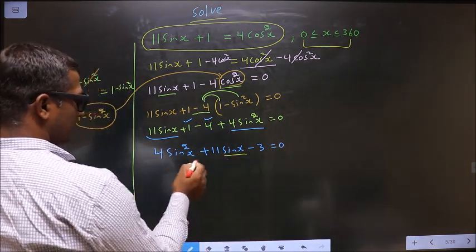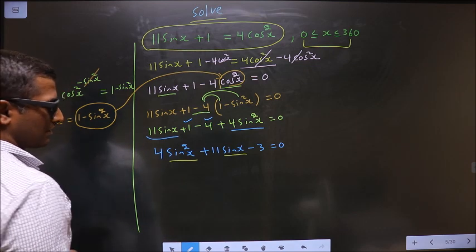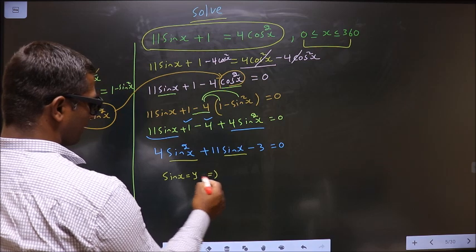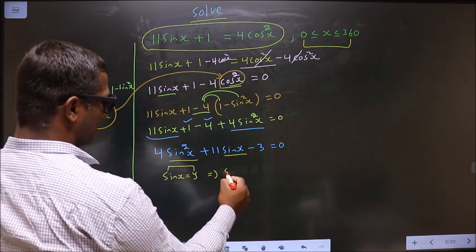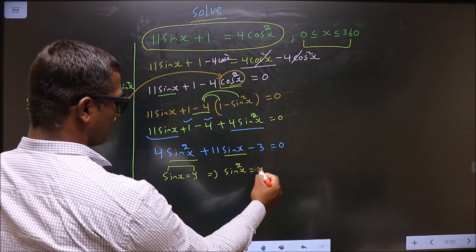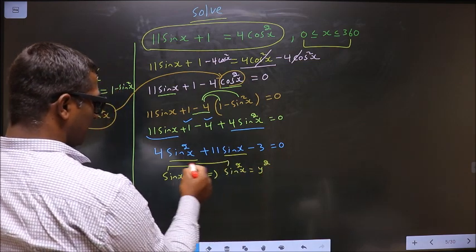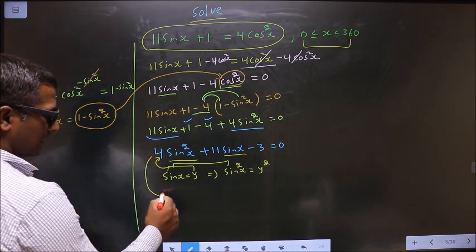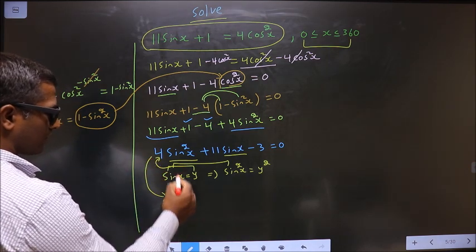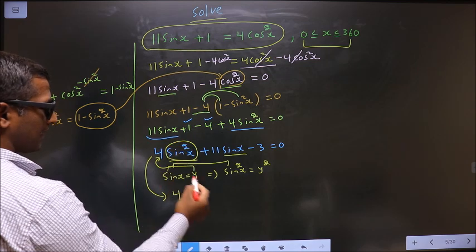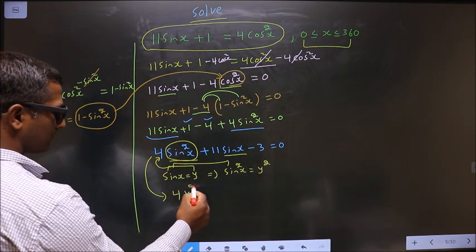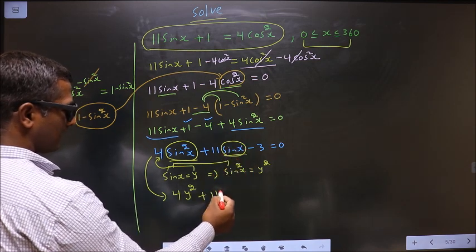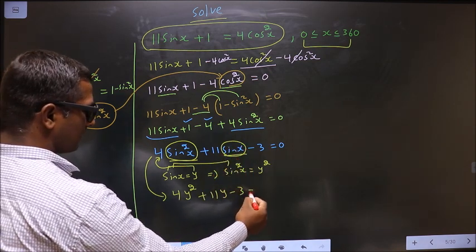Here, you have sin x and also sin square x. So what I do is, I take sin x equal to y. You do the square on both sides, we get sin square x equal to y square. Now, replace these two in this equation. This equation now becomes 4 y square plus 11 y minus 3 equal to 0.